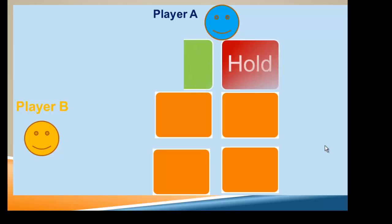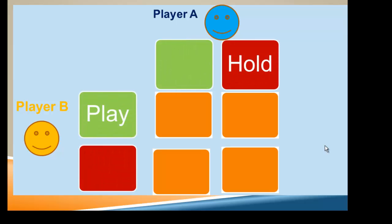Let's do a second one and explore another outcome. This time, player B plays but player A holds. As a result, A gets eight points and B gets zero. A is now ahead in the game.